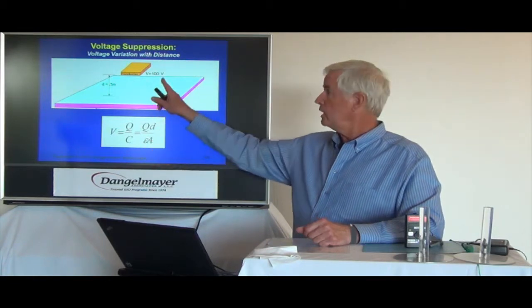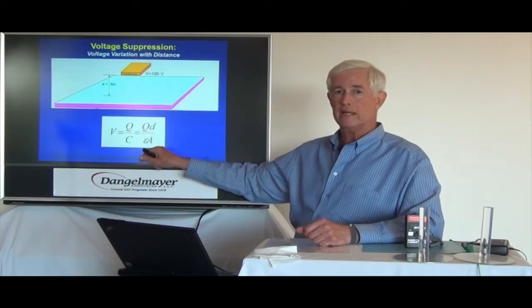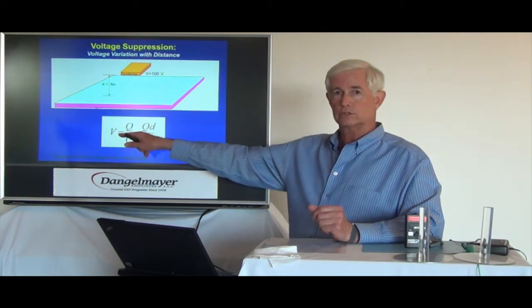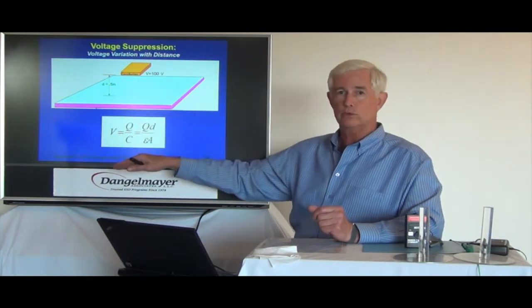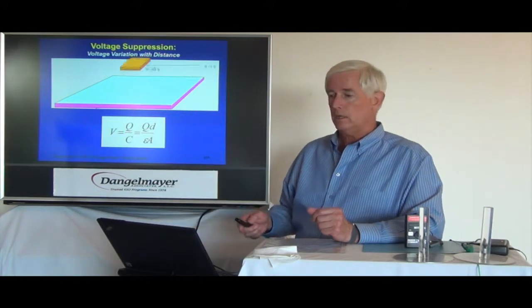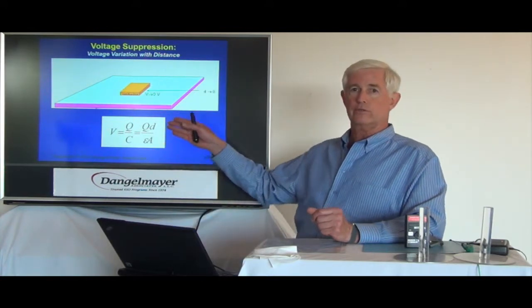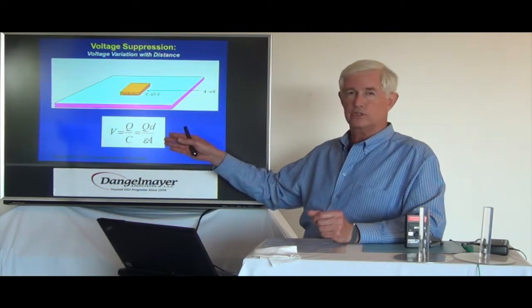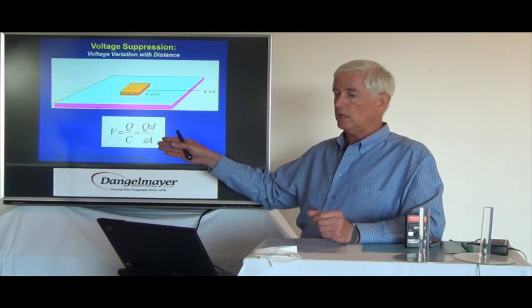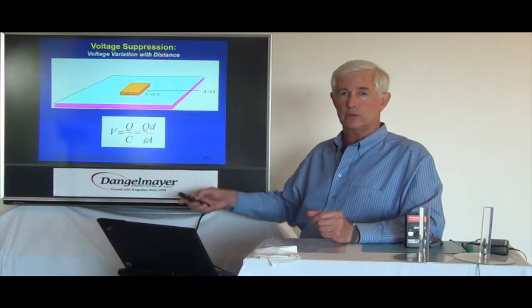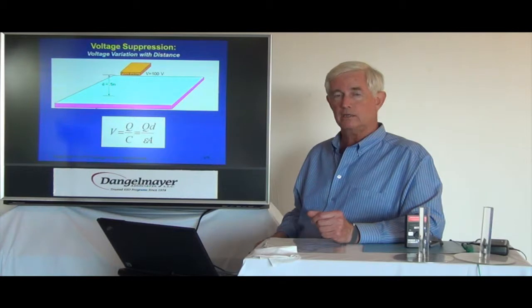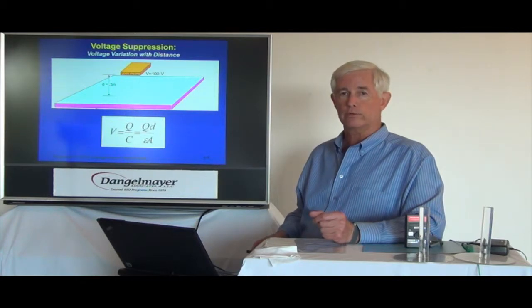So if we change d, which means we're changing the capacitance, that's going to force the voltage to change. So we reduce d, it will reduce the voltage. And here we illustrate that with the upper conductor reduced down to virtually zero disk separation and the voltage on that plate is zero. We bring it back to its original state and it goes back to 100 volts.